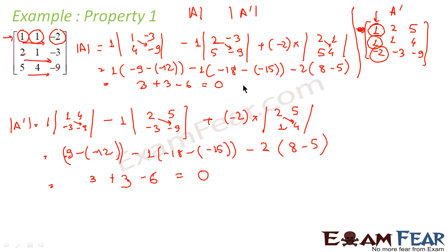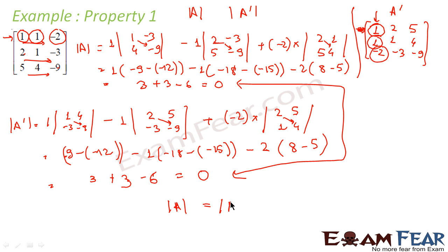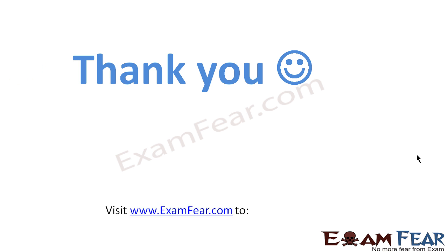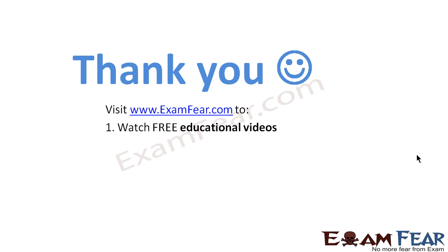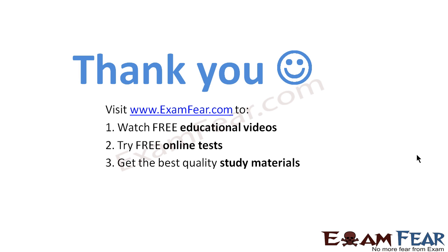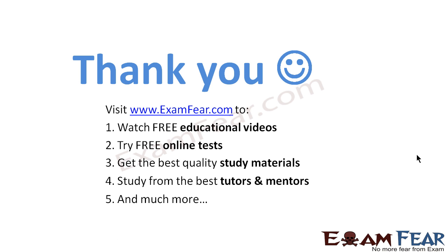So LHS and RHS are the same — I can say that determinant of A equals determinant of A transpose. We have seen that with this example we have proved property 1: the determinant of a matrix A equals the determinant of the transpose of that matrix. Thank you. Visit examfear.com to watch free educational videos, try free online tests, get the best quality study materials, and study from the best tutors and mentors.